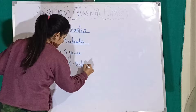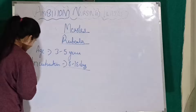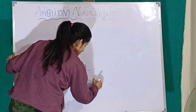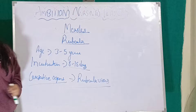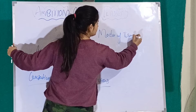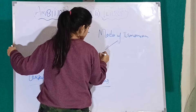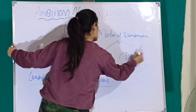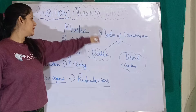The causative agent of measles is the rubella virus. Coming to the mode of transmission — it spreads via droplets, and the second mode is direct contact, like direct touching. So this was the introduction, definition, causative agent, and mode of transmission of measles or rubella.